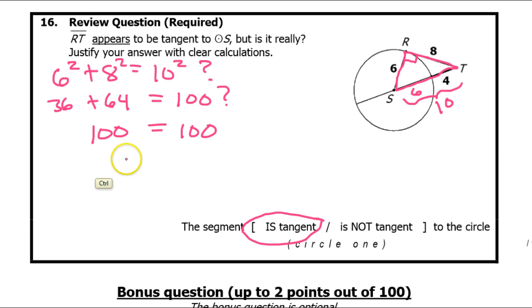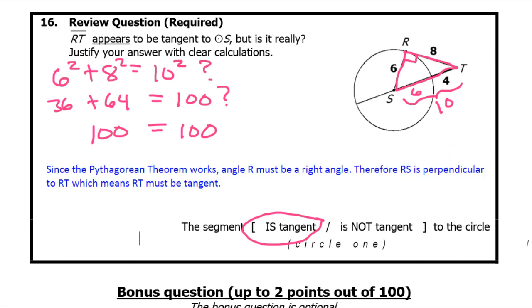But I'm also going to write down the summary statement that I just said. So there it is one more time. Since the Pythagorean theorem works, angle R must be a right angle. Therefore, RS is perpendicular to RT, which means segment RT must be tangent.